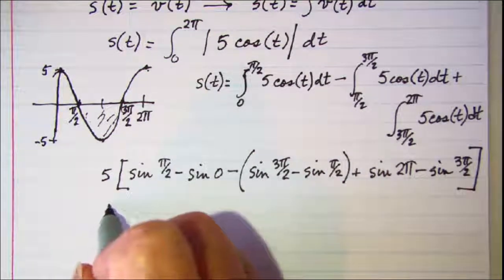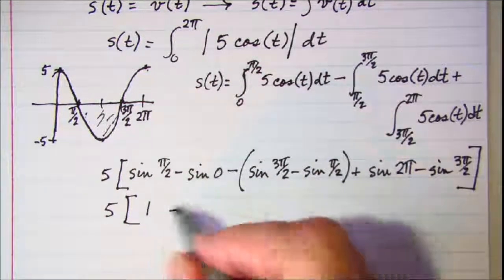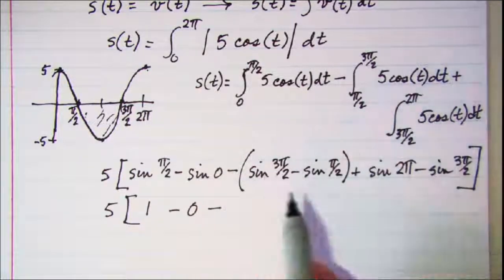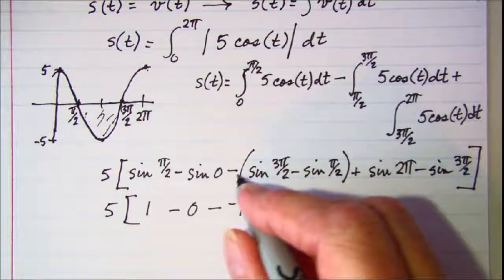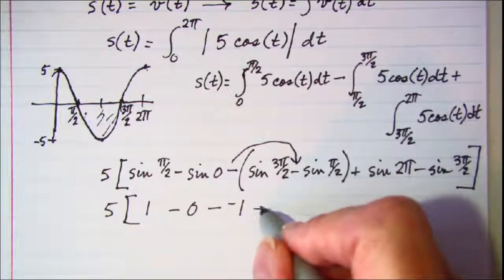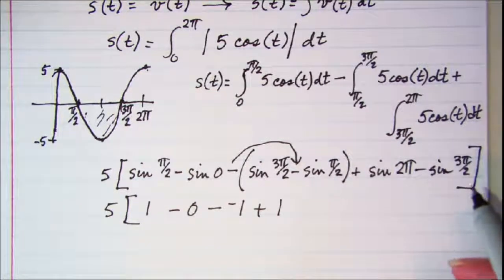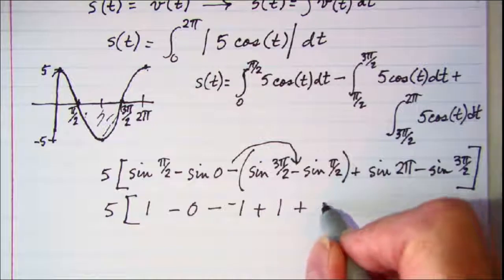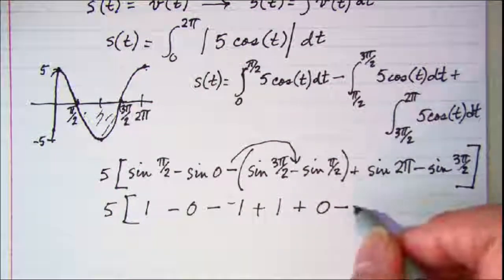Let's do this. We have 5 times, the sine of pi over 2 is 1, the sine of 0 is 0, minus the sine of 3 pi over 2 is negative 1. And then distributing, that'll be plus, and then the sine of pi over 2 is 1, plus the sine of 2 pi is 0, and then minus and the sine of 3 pi over 2 is negative 1.